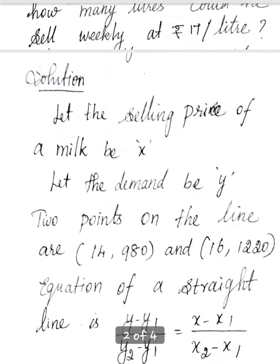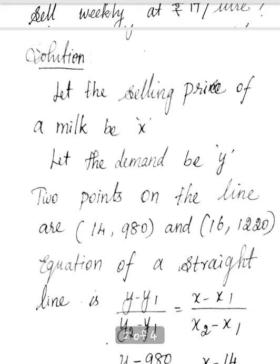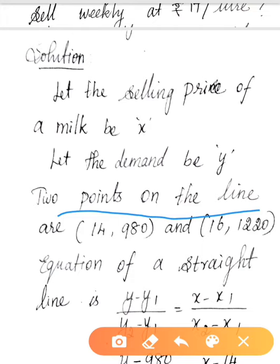First, let the selling price of milk be x. Let the demand be y. So demand means quantity mentioned. Two points on the line are to be formed from this data.